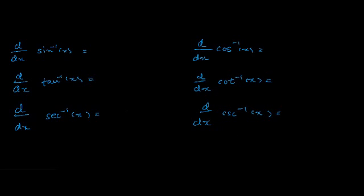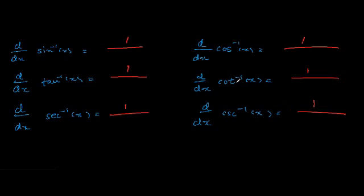Step one: start with one over something as the answer for all of these functions. Step two: on the right side, put a negative sign for all the co-functions. Step three: put the absolute value of x on the bottom for two of the functions.